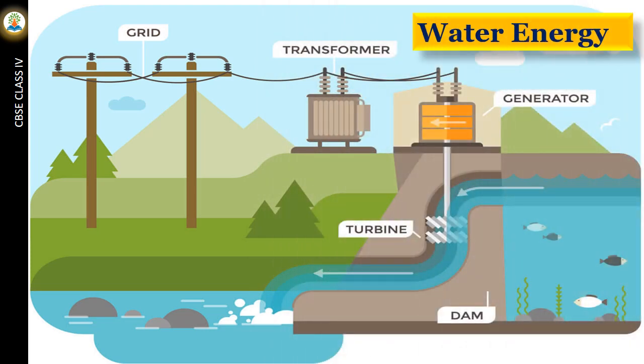The energy of moving water is used to generate electricity. Water of a river is stored at a height behind the walls of a dam. This water is allowed to fall on the blades of a huge fan-like structure called turbine. As the turbine rotates, it generates electricity.